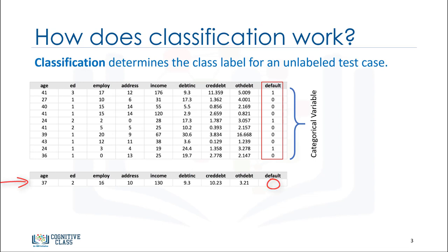Let's explain this with an example. A good example of classification is loan default prediction. Suppose a bank is concerned about the potential for loans not to be repaid. If previous loan default data can be used to predict which customers are likely to have problems repaying loans, these bad risk customers can either have their loan application declined or be offered alternative products.